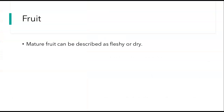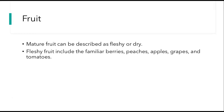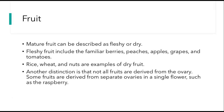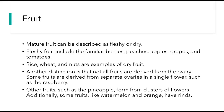Mature fruit can be described as fleshy or dry. Fleshy fruit include the familiar berries, peaches, apples, grapes, and tomatoes. But rice, wheat, and nuts are actually fruit, and they are examples of dry fruit. Another distinction is that not all fruits are derived from the ovary. Some fruits are derived from separate ovaries in a single flower, such as the raspberry. Other fruits, like the pineapple, form from clusters of flowers. Additionally, some fruits, like watermelon and orange, have tough coverings called rinds.